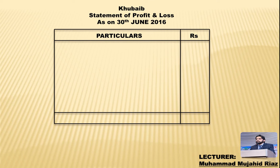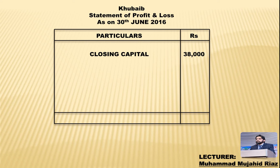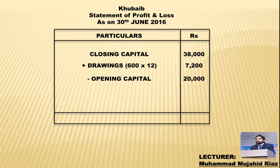اس format میں سب سے اوپر owner کا نام، پھر Statement of Profit and Loss کا نام، اور پھر date — 30th June 2016۔ سب سے پہلے closing capital لکھتے ہیں جو question میں دیا گیا تھا: 38,000 روپیز۔ پھر drawings add کرنی ہے: 600 × 12 = 7,200۔ پھر minus کریں گے opening capital: 20,000 روپیز۔